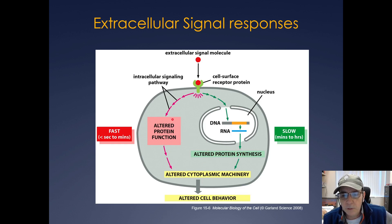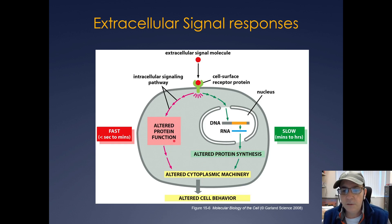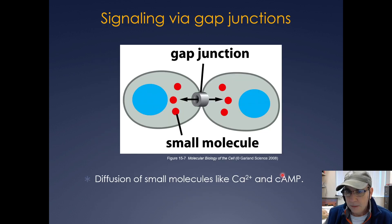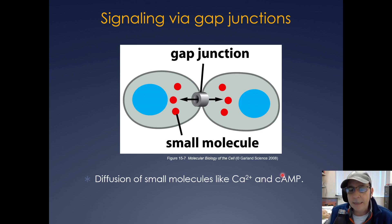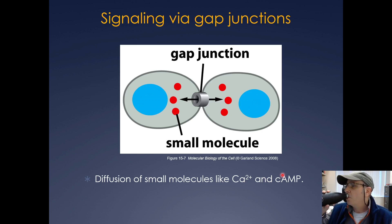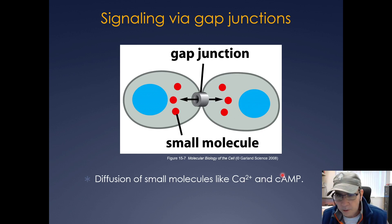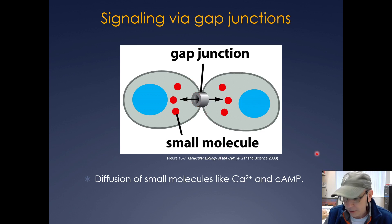In contrast, when proteins are already present, changes in protein activity alone can change function. You can also get signaling via gap junctions, which often involves diffusion of small molecules like calcium and cyclic AMP through little pores where two cells are attached together.